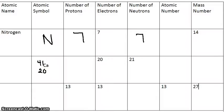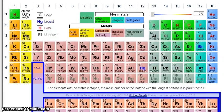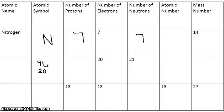The next column is atomic number. Your atomic number is also the number of protons and the number you find on your periodic table, which again is 7. So you can fill in 7. When you're right beside your atomic symbol, you write your mass number at the top, which is 14, and your atomic number at the bottom, which is 7.